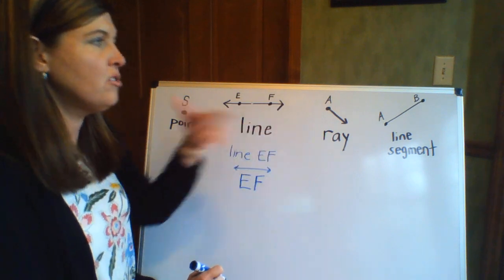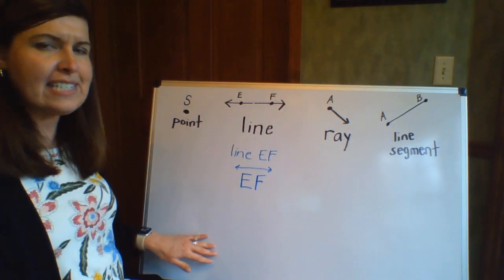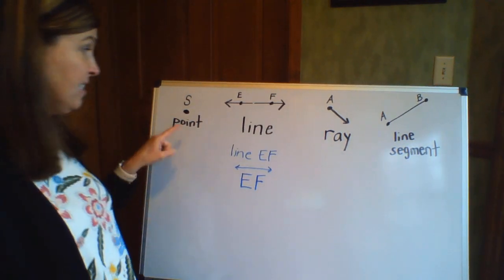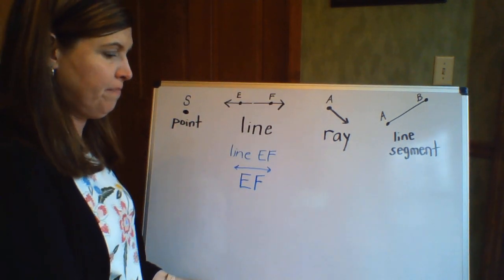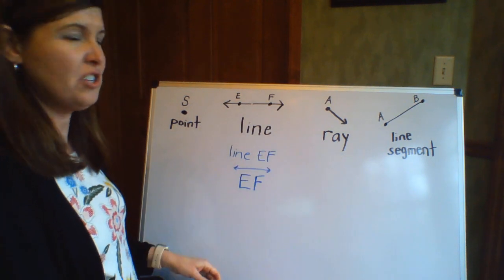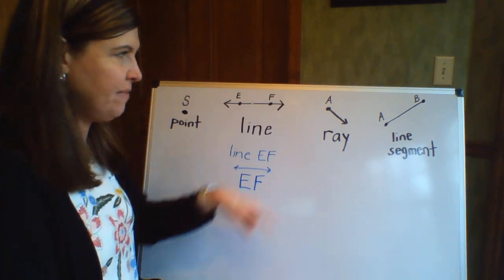The next one is a ray. Now a ray is really interesting because it combines both things. It combines a point and a line together, and we're going to see this when we start talking about angles and things like that.